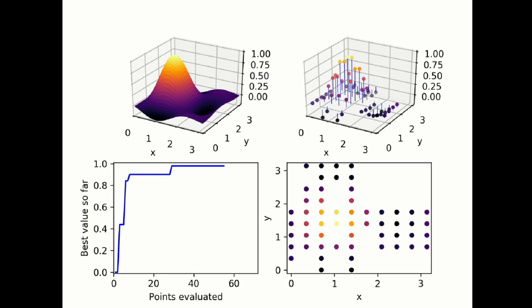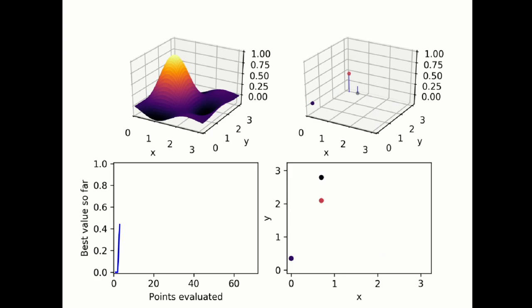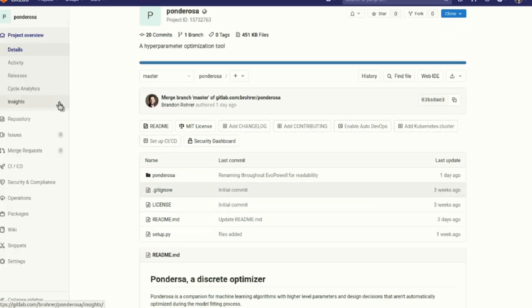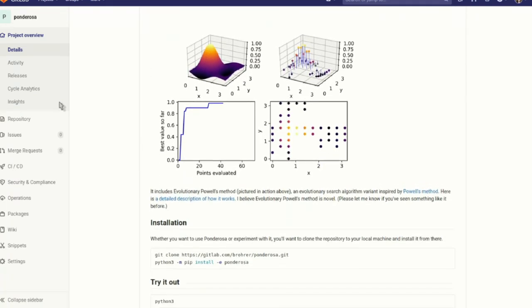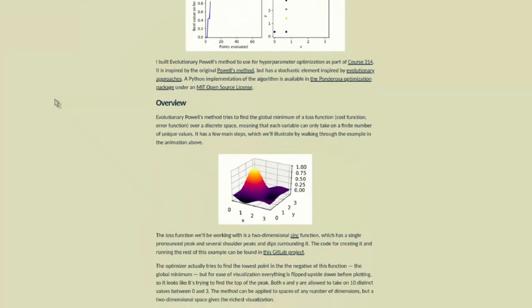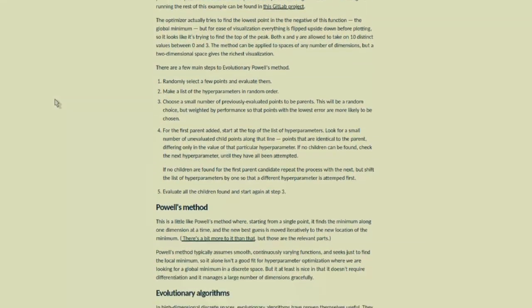I built Evolutionary Powell's method for use as a hyperparameter optimization method as part of Course 314 in the end-to-end machine learning curriculum. It's inspired by the original Powell's method, but it has a stochastic element inspired by evolutionary approaches. There's a Python implementation available in the Ponderosa optimization package, under an MIT open source license. The links to all of these resources are available through the post linked in the comments below.